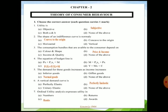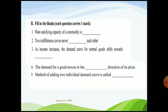Next part in Section A is fill in the blanks. First: want-satisfying capacity of a commodity is utility. Second: two indifference curves never intersect each other — as studied, it is a property of indifference curve analysis that they never intersect. Third: as income increases, the demand curve for normal goods shifts rightward. Rightward means an increase — as consumer income increases, demand for normal goods increases, shown as a rightward shift in the demand curve.